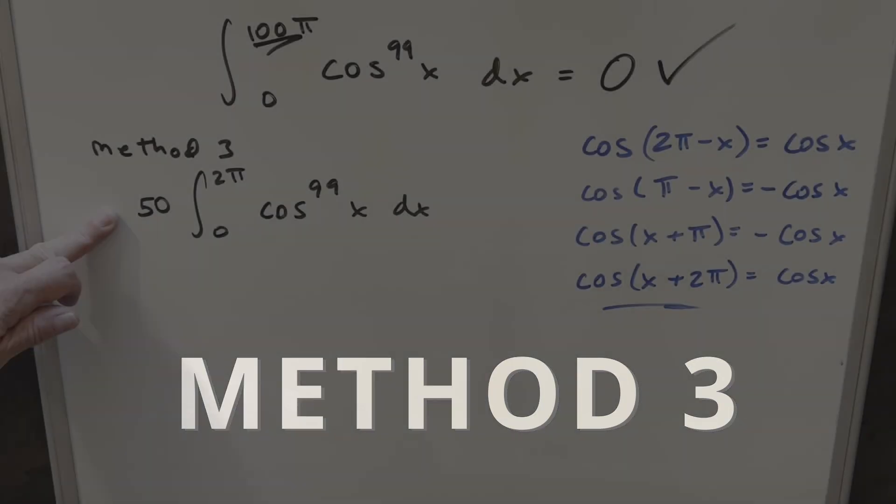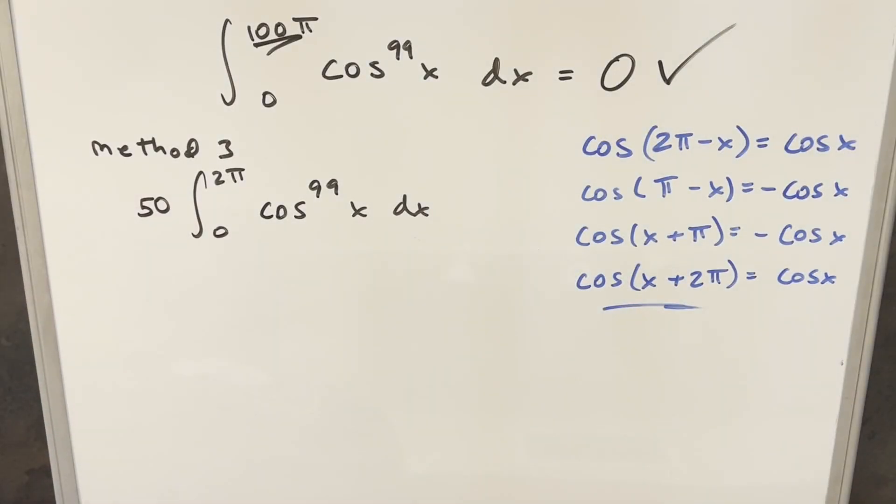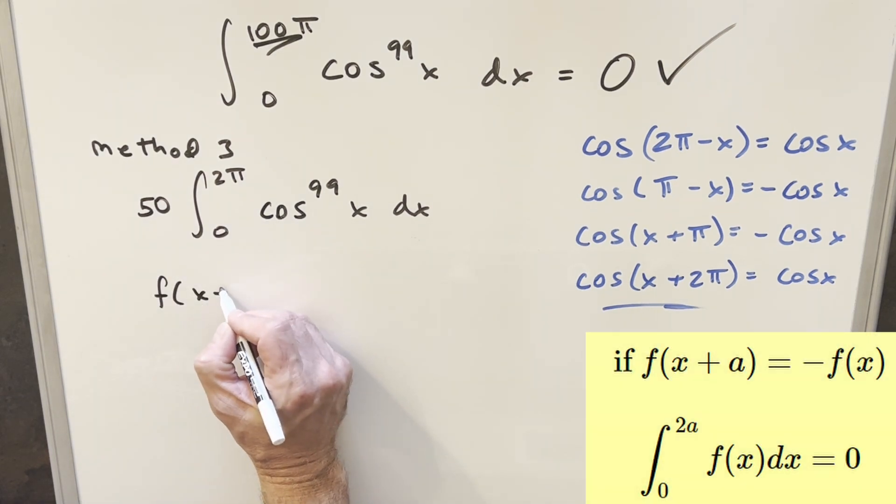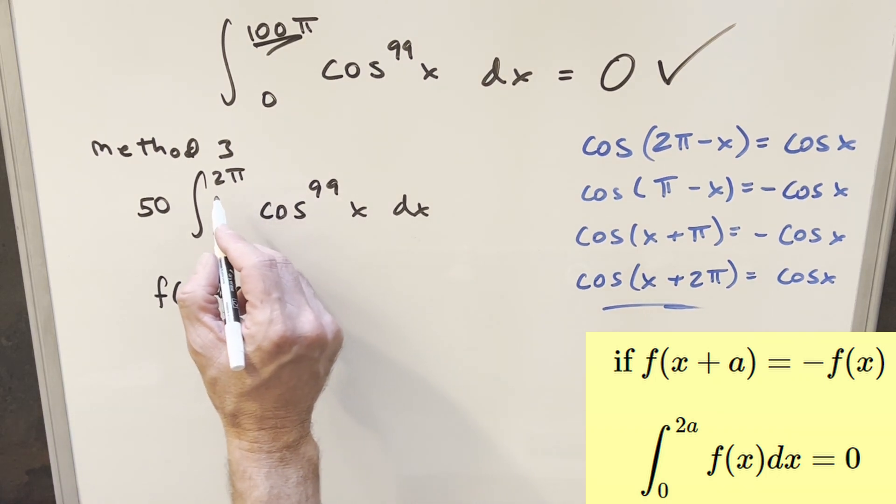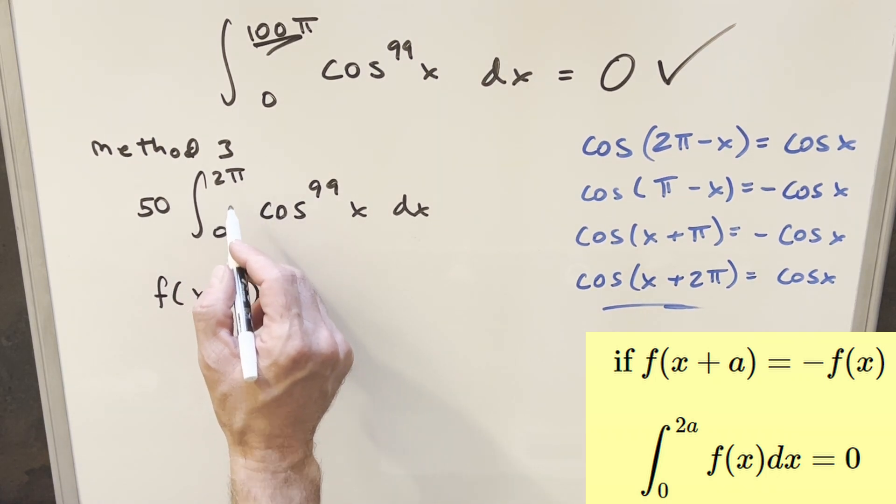Next moving on to method 3. The first step is exactly the same as method 2. I already brought the 50 up front, so I don't need to do that same method again. But then next, what we're going to do is we're going to use this principle where we need to check f of x plus a, where now in this case, a is going to be just half of the upper bound, not the full upper bound, so it's going to be pi.